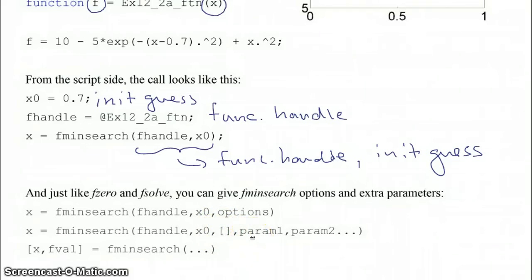And then the third and after inputs to fminsearch are the parameters to your function. In addition to that, you can have fminsearch spit out where the minimum in your function is, but also what is the value of that minimum. So it can have two outputs.